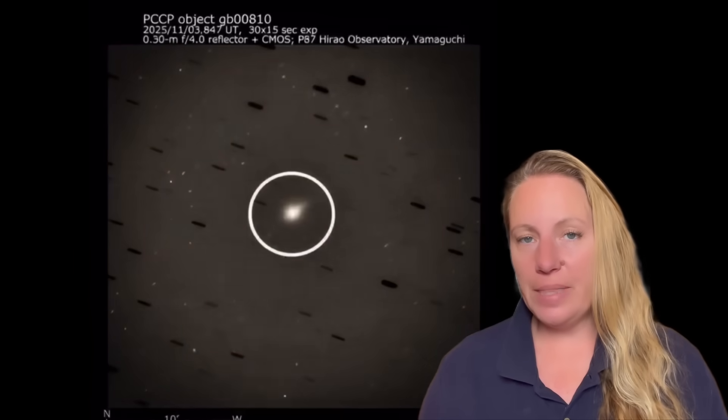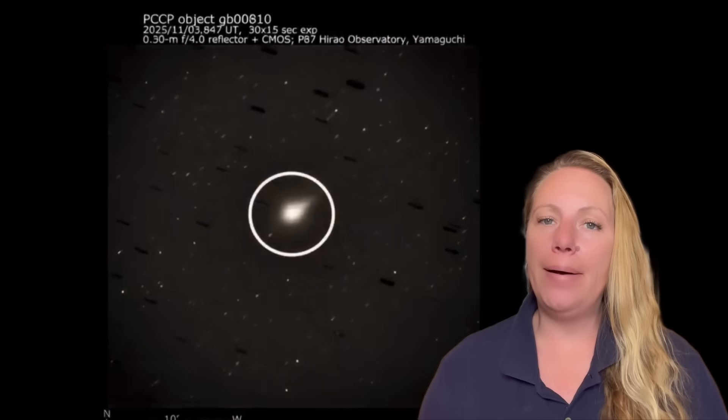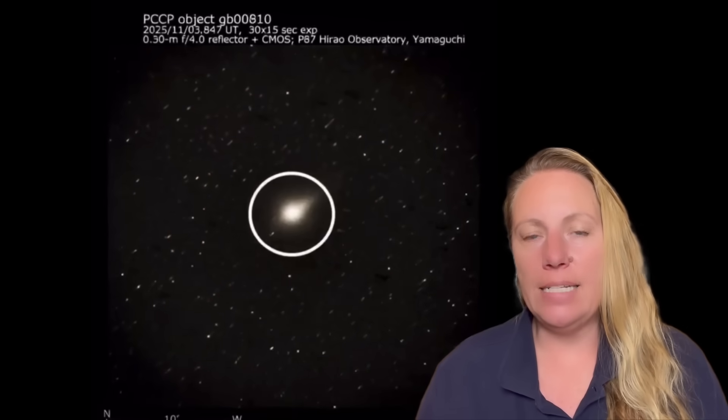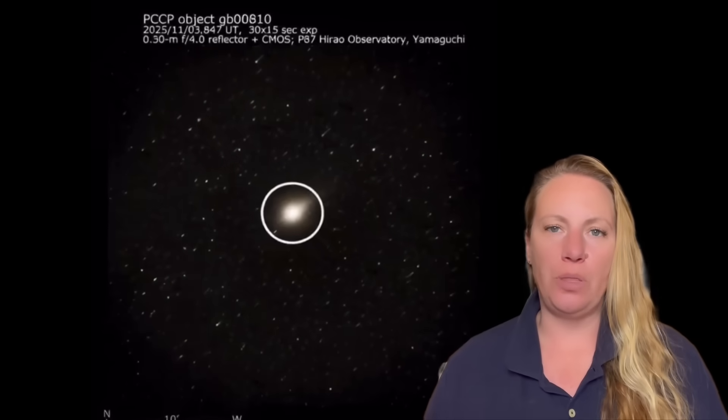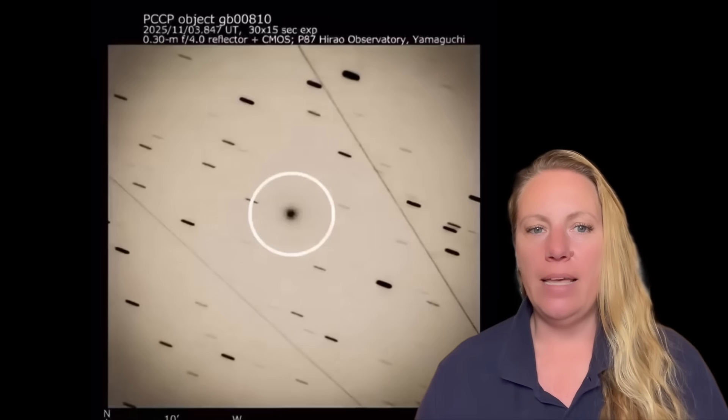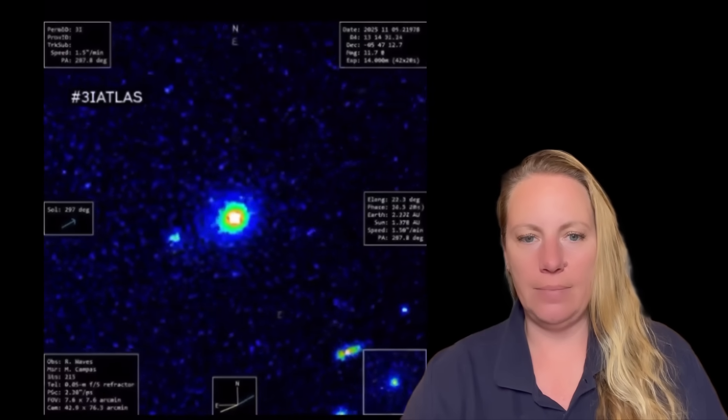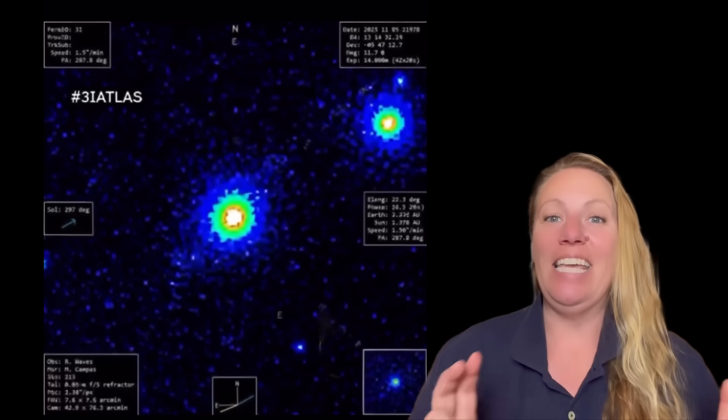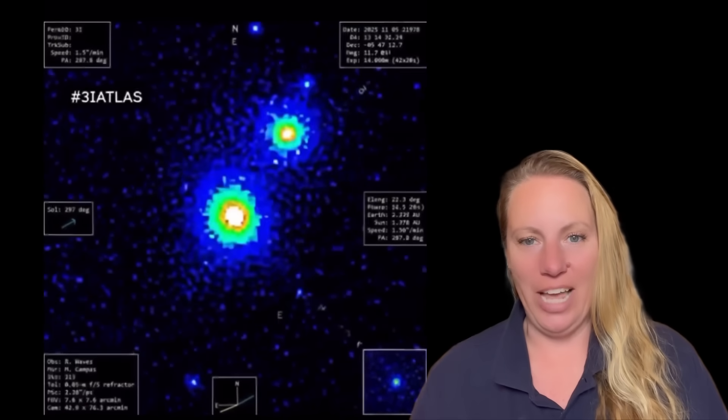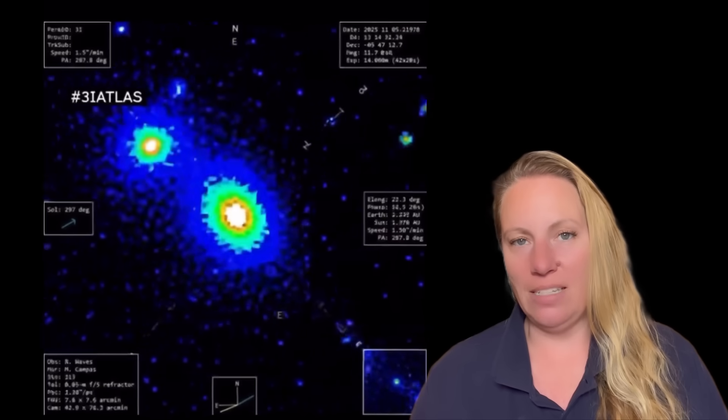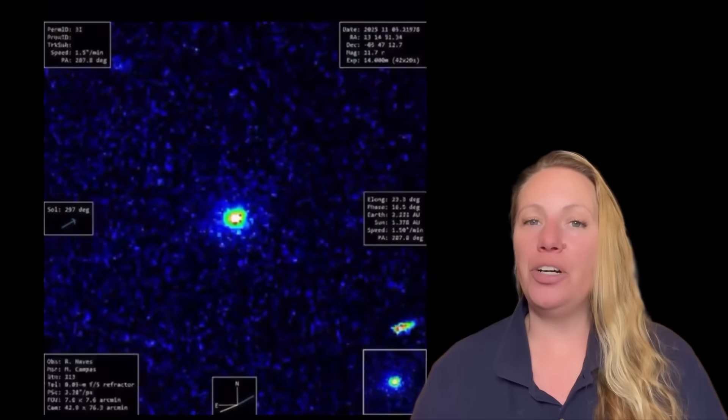So there were some claims that are now really proven false that Borisov is connected with 3i/ATLAS or is coming from the same area or is related to 3i/ATLAS. Many call it a new nearly interstellar object that was just discovered in our inner solar system after the perihelion passage of interstellar object 3i/ATLAS. So the timing is, of course, strange, right? Of course.